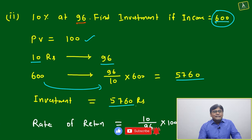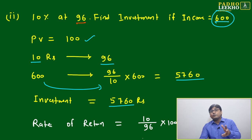You have to invest 5760 rupees in the share of 10% at 96, then you will get the income equal to 600. In another way, I'm telling you the same thing in different language. You'll realize this after solving practice questions.